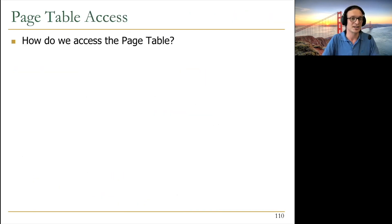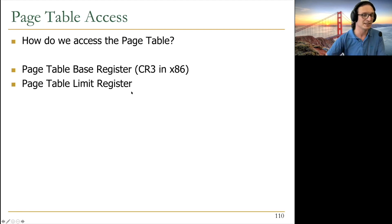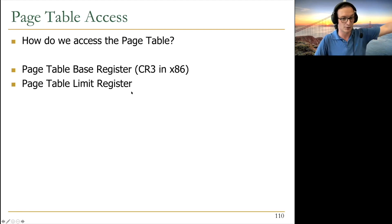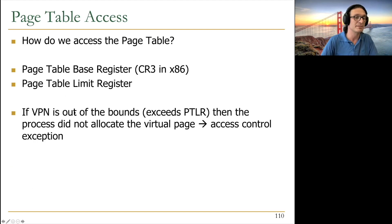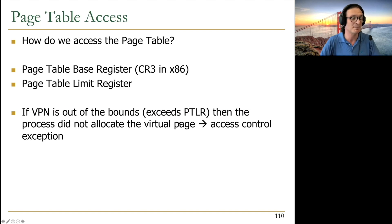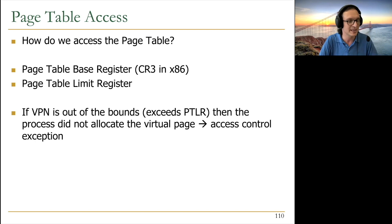There's a page table base register and also a page table limit register, so you don't exceed the virtual memory you're accessing. If the virtual page number exceeds the page table limit register, the process didn't allocate that virtual page, and an access control exception occurs. X86 also has segmentation, which provides another level of protection.